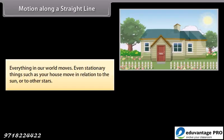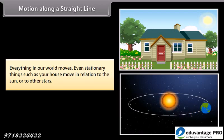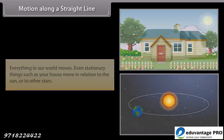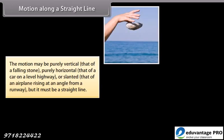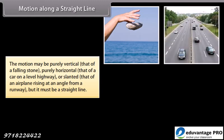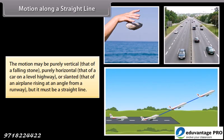Motion along a straight line. Everything in our world moves. Even stationary things such as your house move in relation to the sun or other stars. The motion may be purely vertical, such as that of a falling stone; purely horizontal, such as that of a car on a level highway; or slanted, such as that of an airplane rising at an angle from a runway. But it must be a straight line.